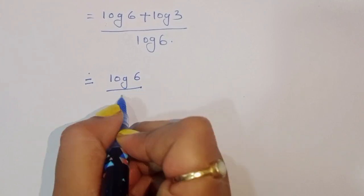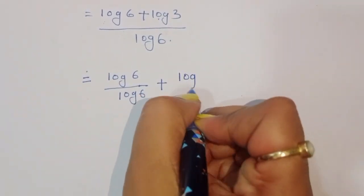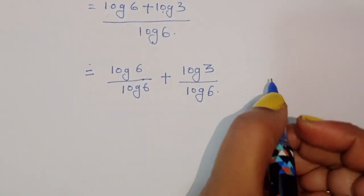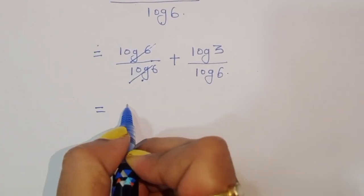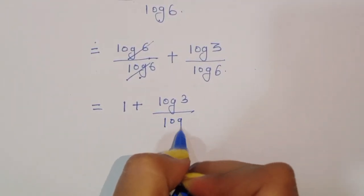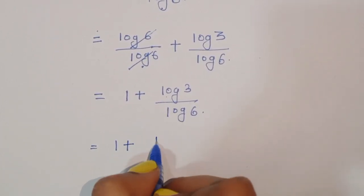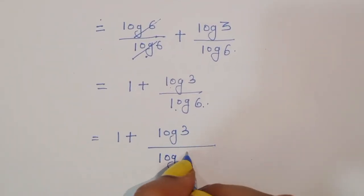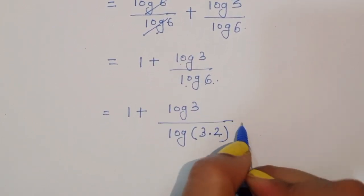Separating the terms, we get log of 6 divided by log of 6, plus log of 3 divided by log of 6. Since log of 6 divided by log of 6 cancels to 1, we can write this as 1 plus log of 3 divided by log of 6.